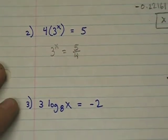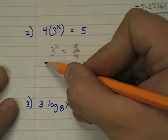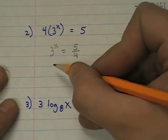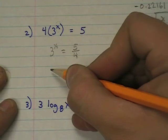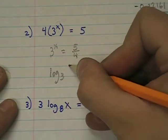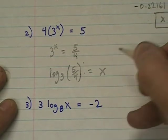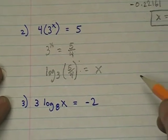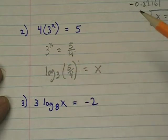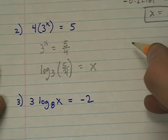So 3 to the x power equals 5 fourths. Now we have an equation in the form of b to the x equals y. And if I convert this to a logarithm, I'm going to get log 3 of 5 fourths equals x. Well, that's a pretty simple equation as long as I can find this. The problem is I don't have a log 3 key. So how do I find log 3 if I don't have a log 3 key? I use my change of base formula.